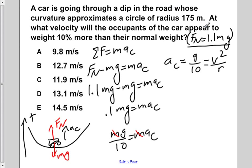So the first thing we're going to do is multiply both sides by r. This will give us v squared is equal to gr over 10.